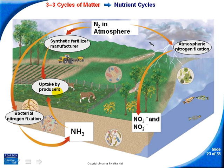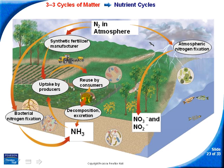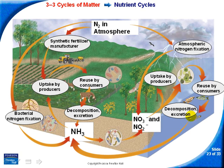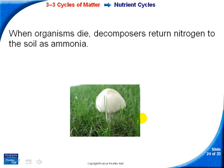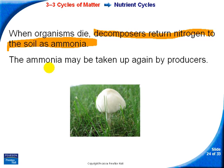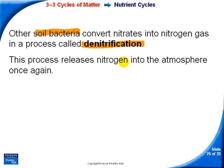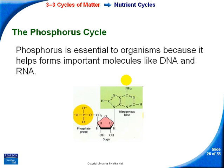Nitrogen is eaten by producers, then reused by consumers who eat the producers. Through decomposition and excretion, the animal dies and releases nitrogen as waste into the ground, keeping nitrogen cycling through. Decomposers return it to the soil as ammonia, which can be taken up by producers again. Soil bacteria can also convert nitrates into nitrogen gas through a process called denitrification, releasing nitrogen back into the atmosphere where it can be used again.